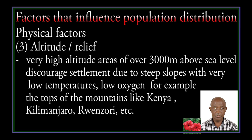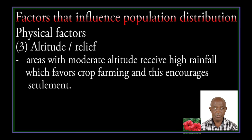Altitude: very high altitude areas over 5,000 meters above sea level discourage settlement due to steep slopes and low oxygen — for example, on the tops of mountains like Kenya, Kilimanjaro, Rwenzori and so on. Areas with moderate altitude receive high rainfall, which favors crop farming and this encourages settlement.